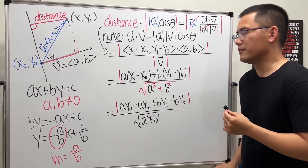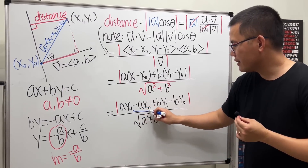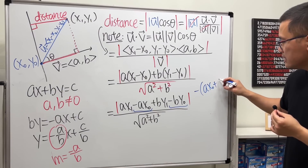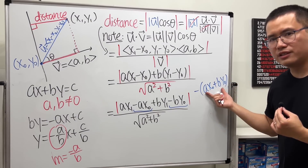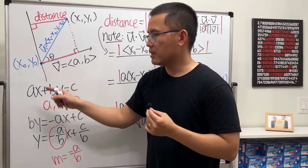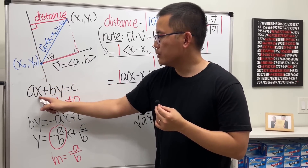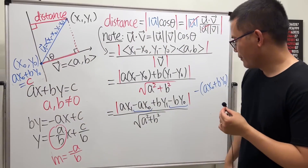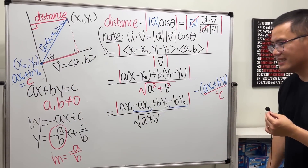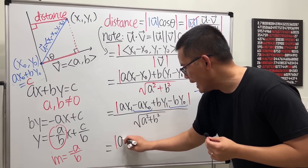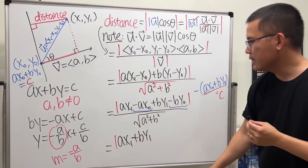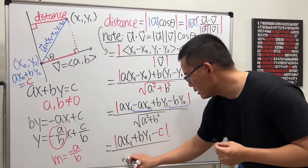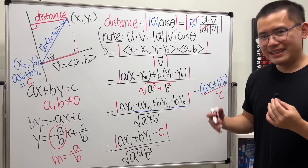We can factor out a negative from the −ax₀ − by₀ terms to get −(ax₀ + by₀). Since (x₀, y₀) lies on the line ax + by = c, we have ax₀ + by₀ = c. Substituting, the numerator becomes |ax₁ + by₁ − c|.